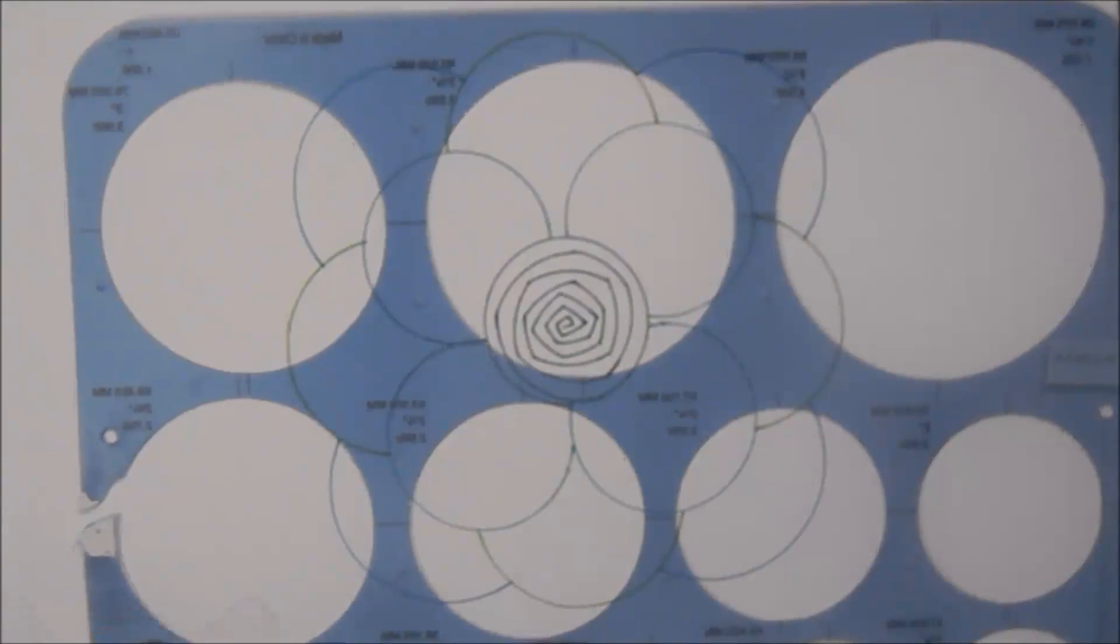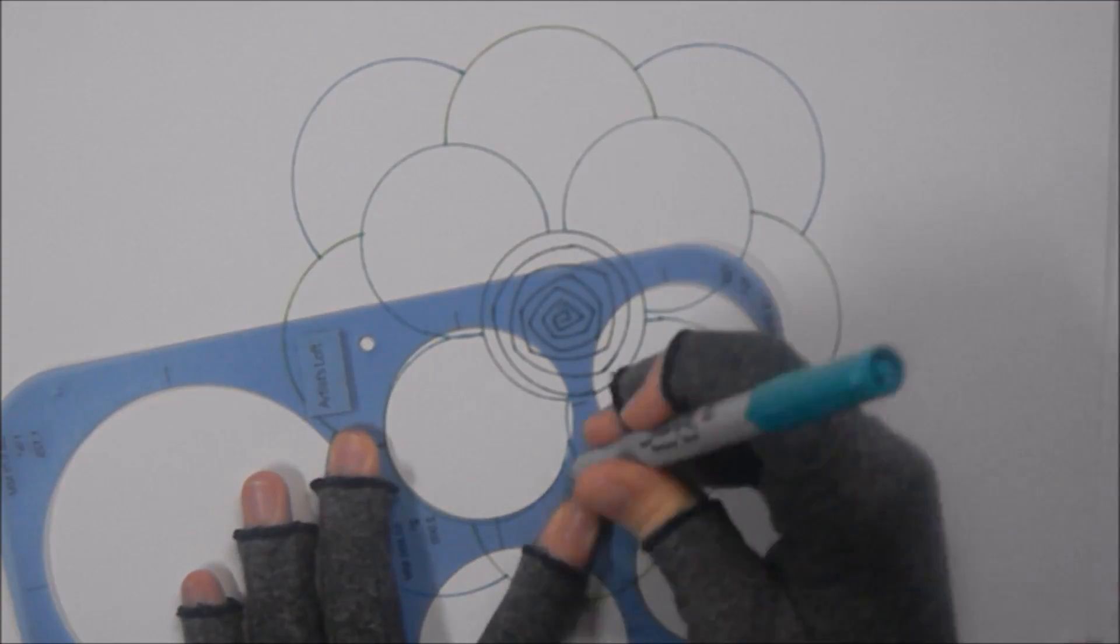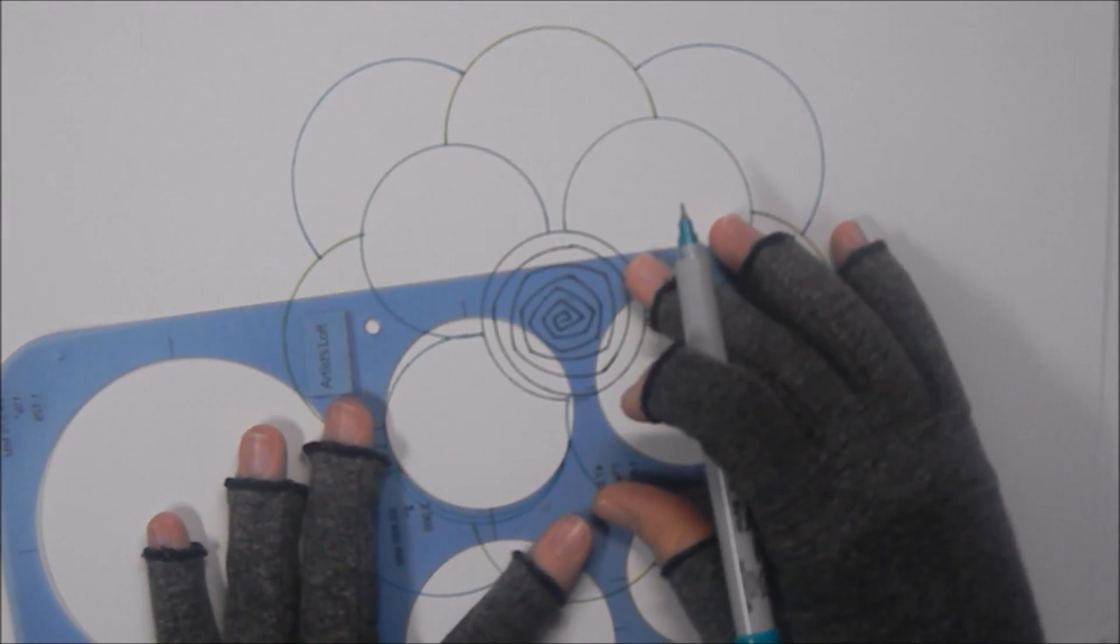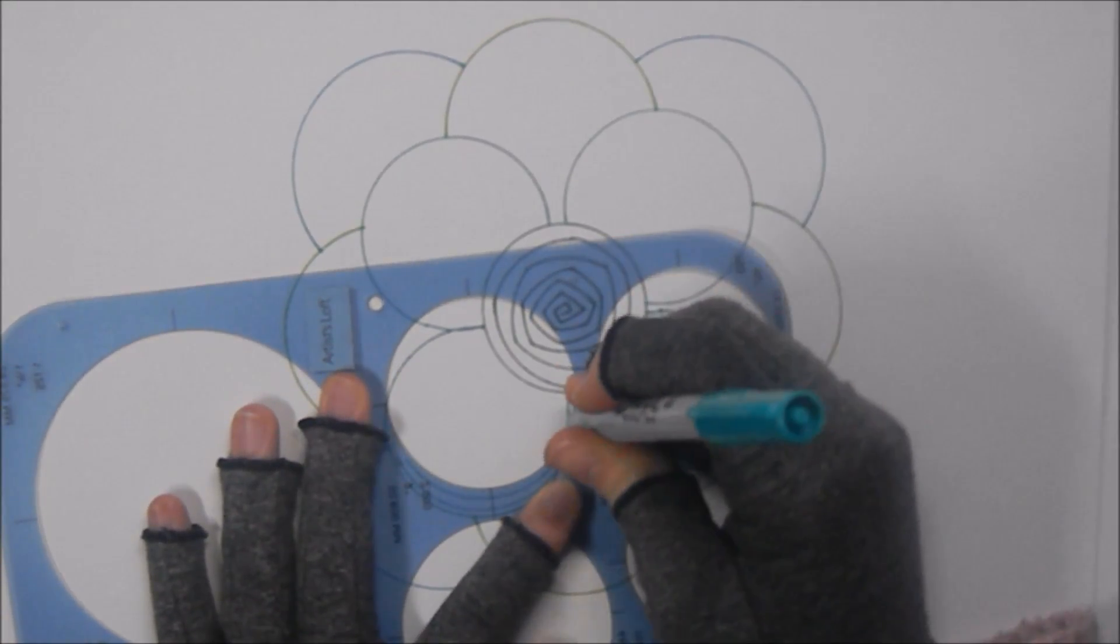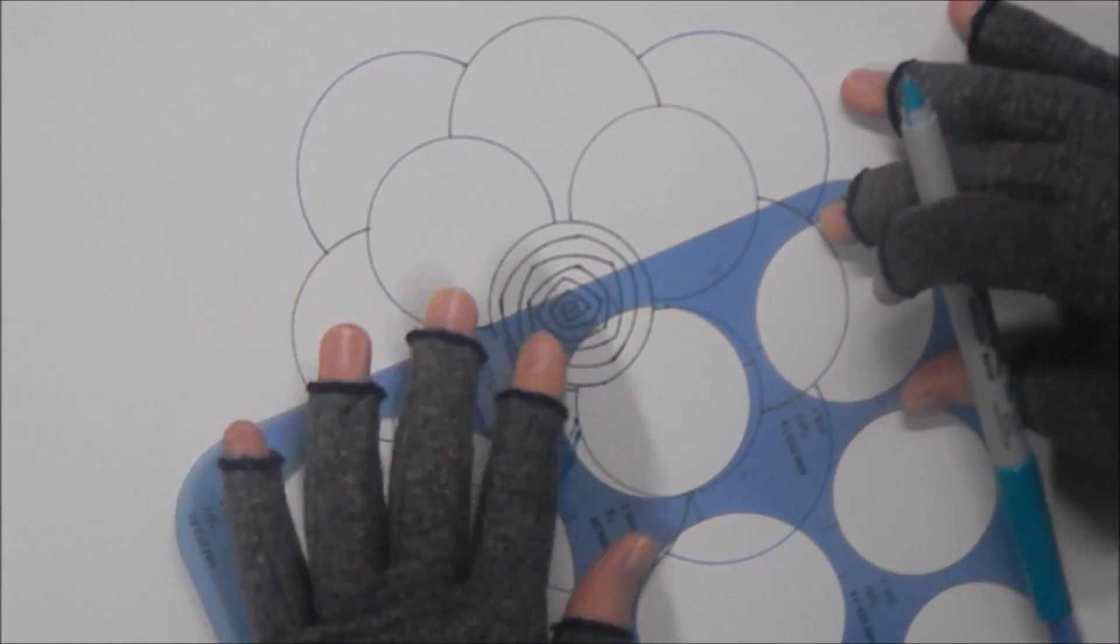Although this one didn't quite turn out the shape that I was hoping. It ended up more of a square shape kind of flower when I was really going for a nice, large round circle kind of thing. But I still think this turned out okay.